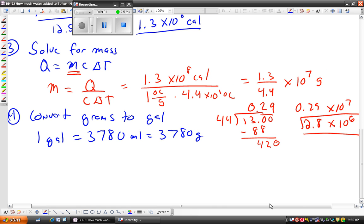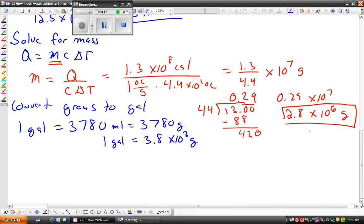So again, to make our life easier, I'm going to round this again. So this conversion factor is going to be 1 gallon is approximately 3.8 times 10 to the 3 grams. And then we just need to convert this number of grams into gallons.